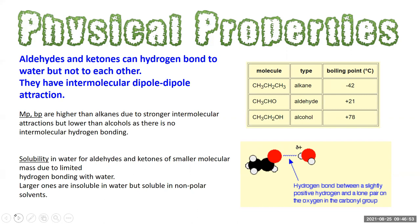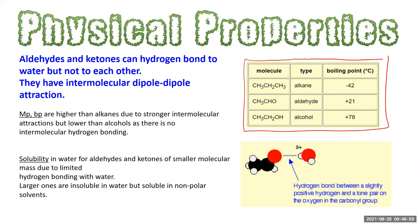Looking at this table, we compare an alkane, an aldehyde, and an alcohol of similar molecular mass — important so that dispersion forces are consistent and we can isolate the effect of dipole-dipole interactions or hydrogen bonding. For the alkane with only dispersion forces, the boiling point is −42 °C. For the aldehyde with dipole-dipole attractions but no hydrogen bonding, the boiling point is 21 °C. For ethanol, which has both dispersion forces and hydrogen bonding, the boiling point is a much higher 78 °C.